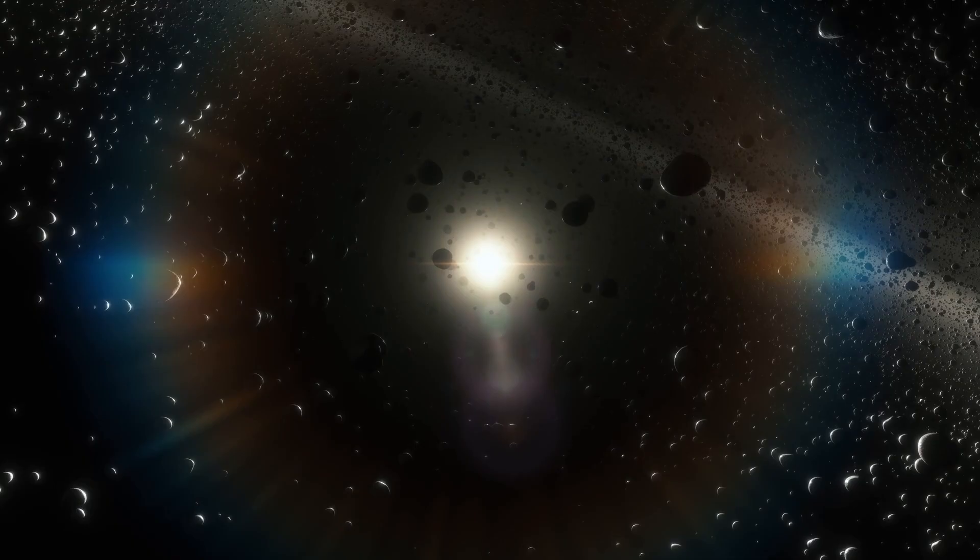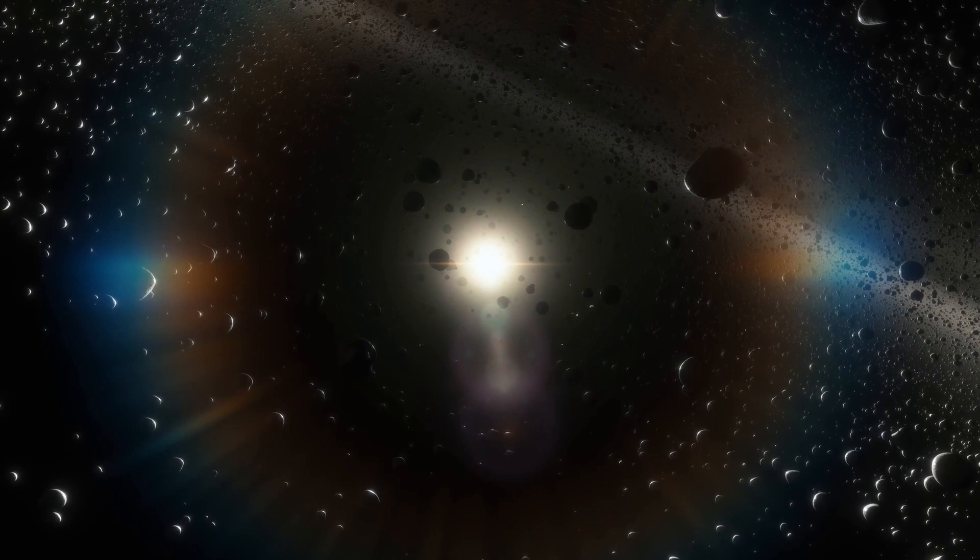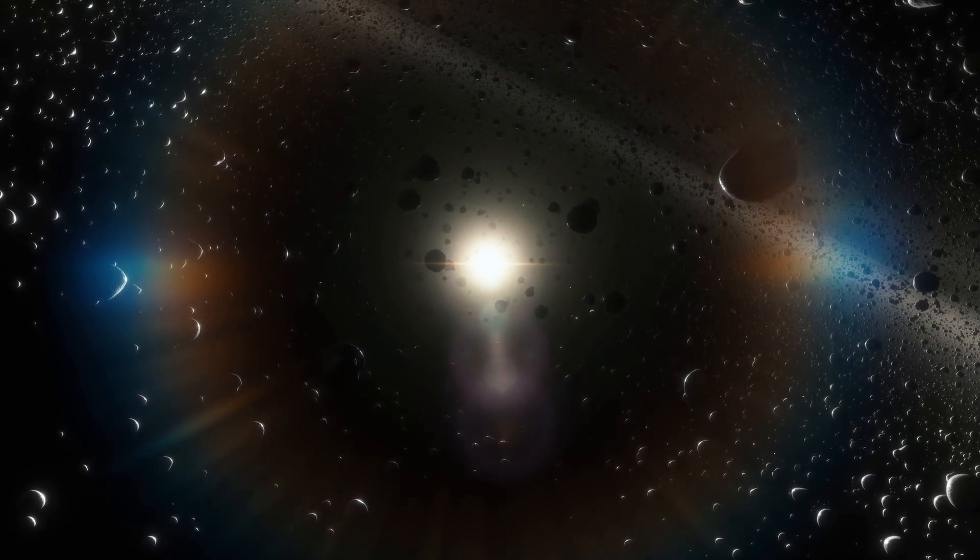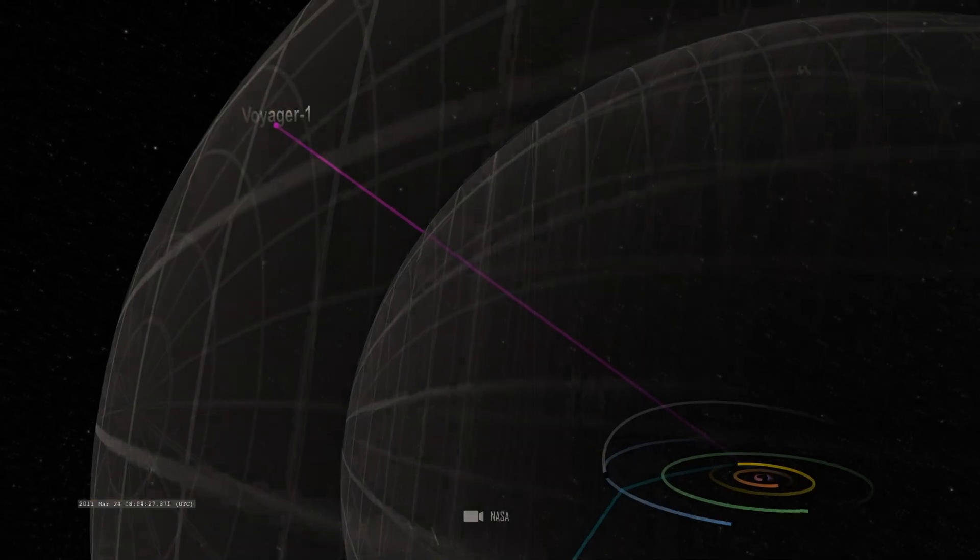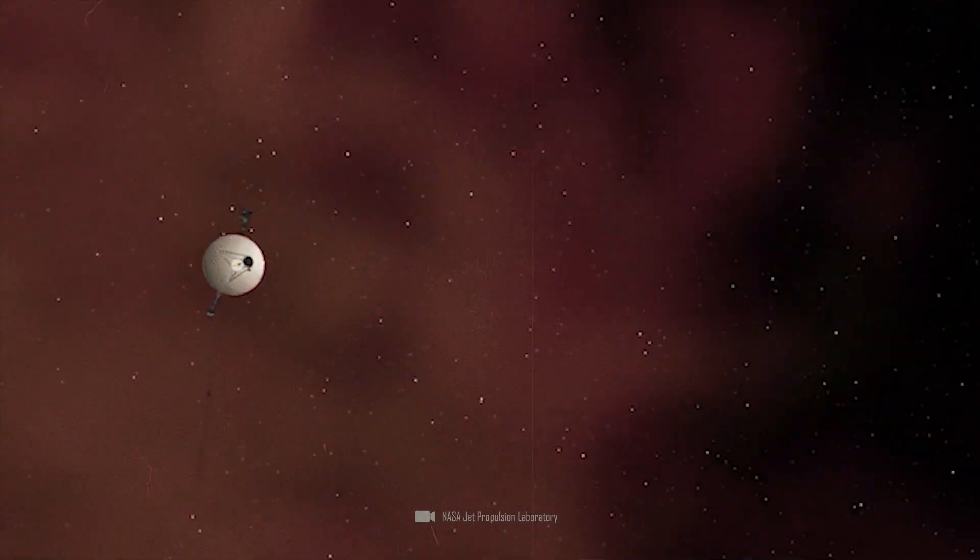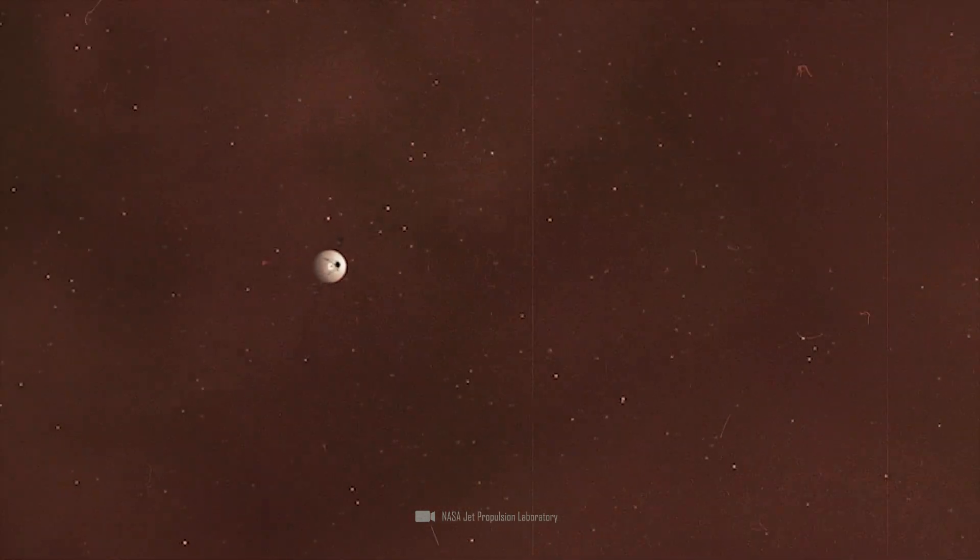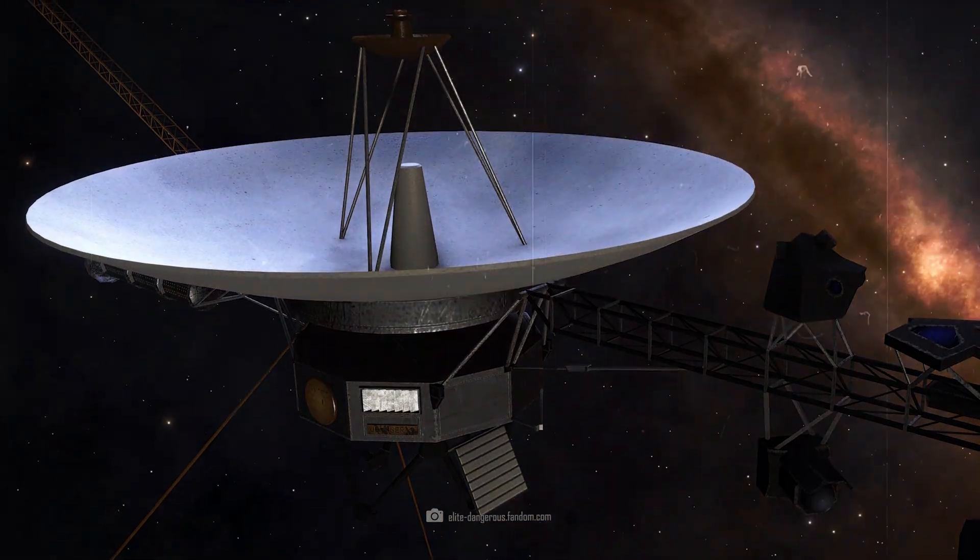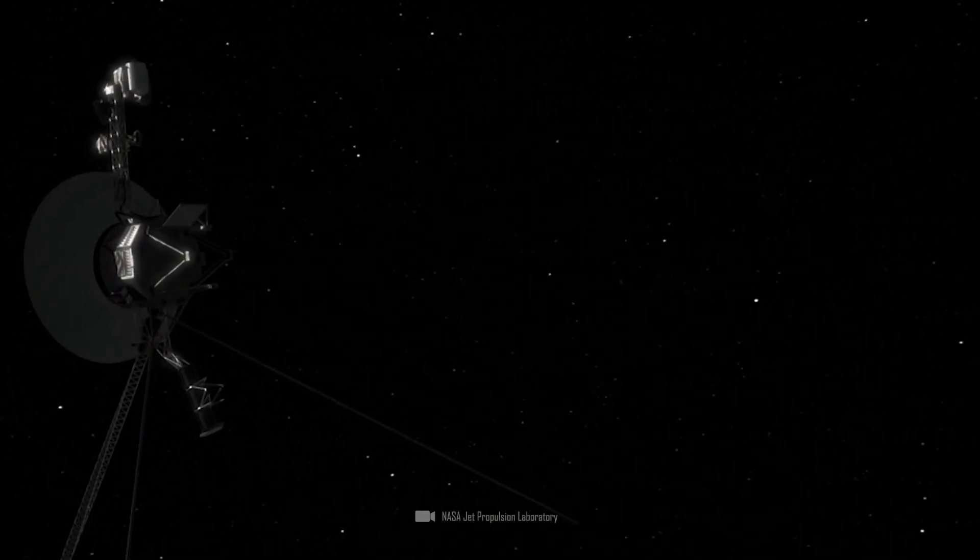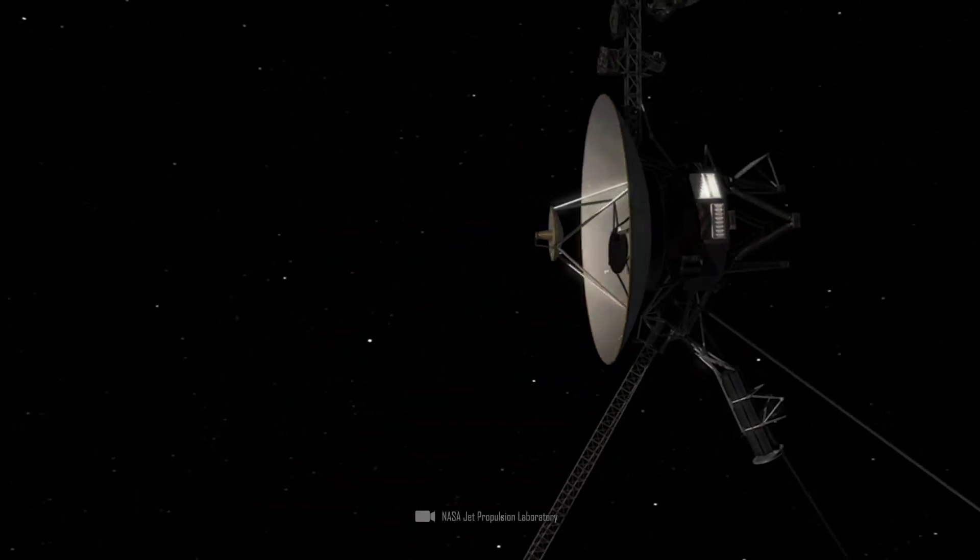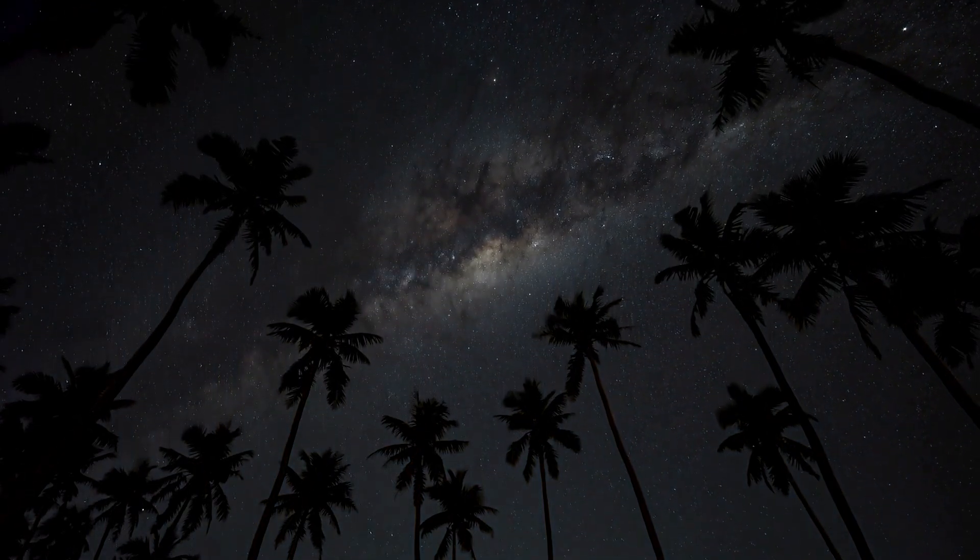Voyager 1 flies at a speed of around 62,140 kilometers per hour and has long since crossed the boundaries of our solar system. In 2012, Voyager 1 was the first man-made object to leave the heliosphere and enter interstellar space. The identical Voyager 2 probe followed shortly afterwards.